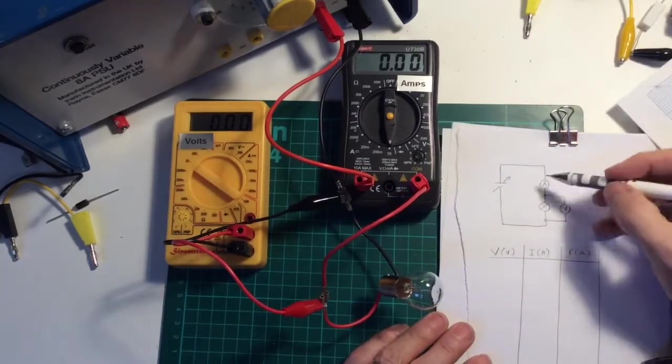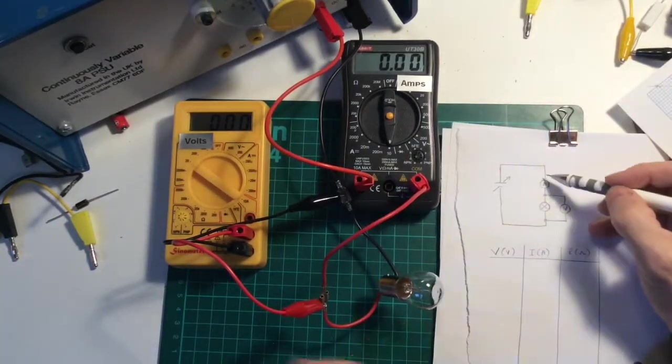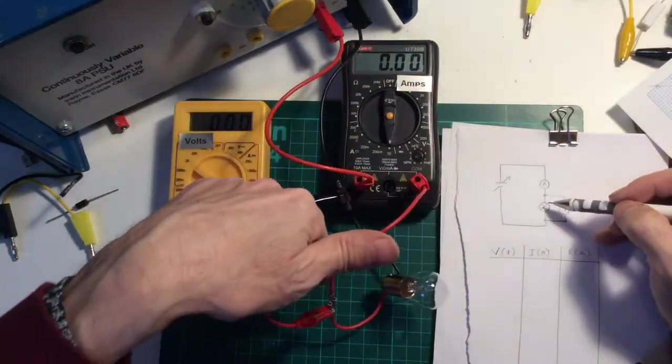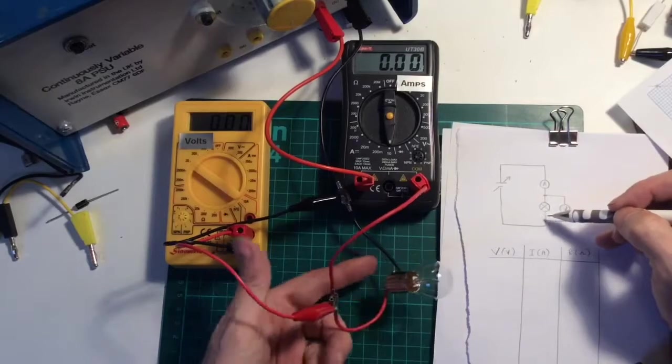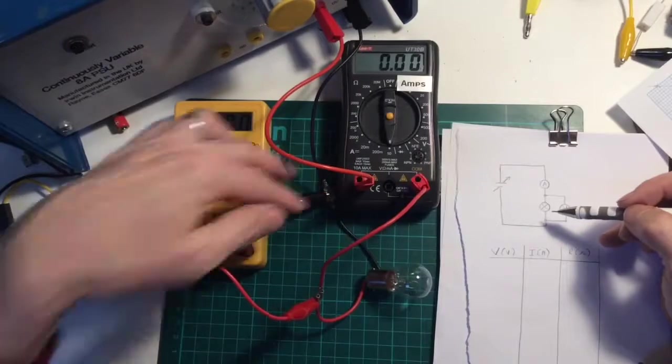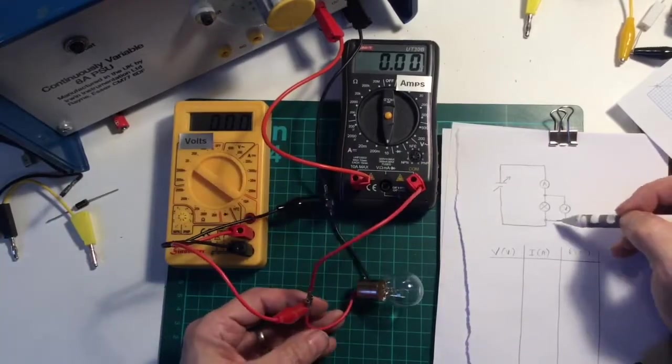This is the circuit I've drawn this time. I've still got the variable power supply. It connects to the ammeter first and then from the ammeter to the light bulb, then from the other side of the light bulb back to the power supply, but I've got my voltmeter connected across the wires to the light bulb.